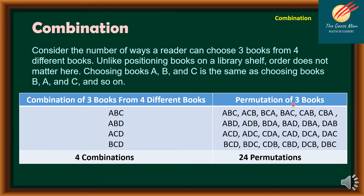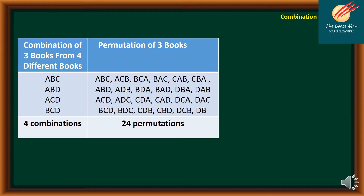On the other hand, the permutations of three books — wherein arrangement of books is important — gives us the following: A-B-C, A-C-B, B-C-A, B-A-C, C-A-B, C-B-A, then A-B-D, A-D-B, B-D-A, B-A-D, D-A-B, D-B-A, then A-C-D, A-D-C, C-D-A, C-A-D, D-A-C, D-C-A, as well as D-C-B and D-B-C. So it means we have 24 permutations. Whereas for our combinations of three books from four different books, we have only four combinations.